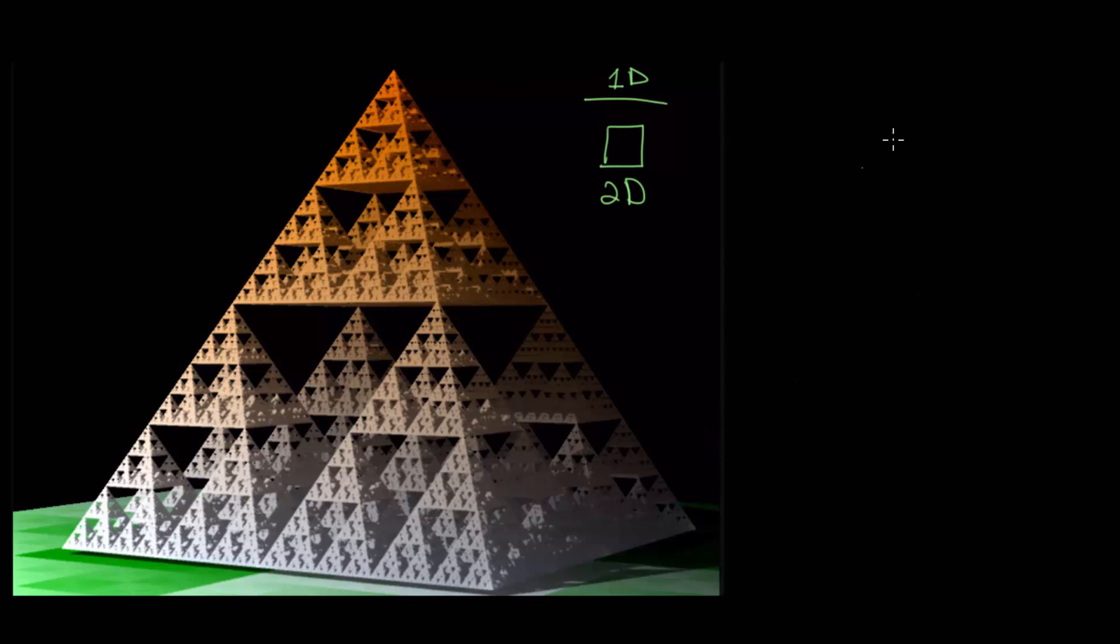And if we just redefine those variables where the scaling factor, again, that's essentially what we are dividing each of the side lengths by. When we go from one step to the next, we call this one over r. We also have the number of pieces, the number of pieces we create going from one step to the next, we can call this n.